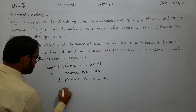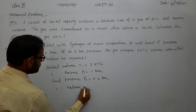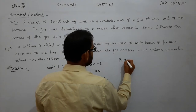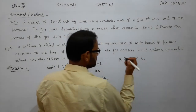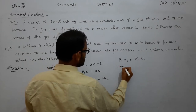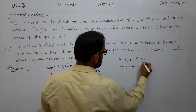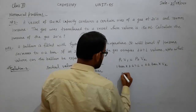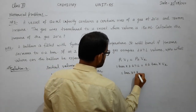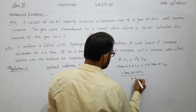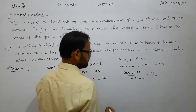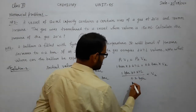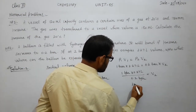We need to calculate the final volume V2. Using Boyle's law P1V1 = P2V2: P1 is 1 bar, V1 is 2.27 liter, P2 is 0.2 bar. So V2 = 1 bar × 2.27 liter ÷ 0.2 bar. The bar units cancel, giving 2.27 ÷ 0.2.